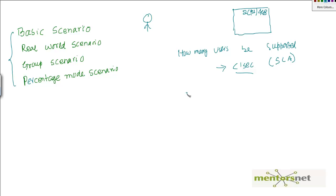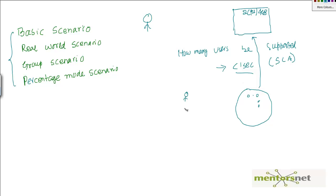If only one user is active and accessing the website, it may be possible to get a response back in one second. But what about when 1 million users are accessing that same 2 CPU, 4 gigabyte machine? Then the server is likely going to crash. We know one user will work, and 1 million will not — but as the administrator, aren't you curious to find out exactly how many users this server can support?